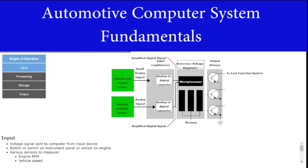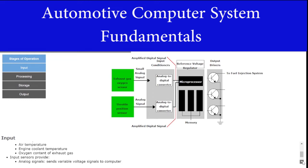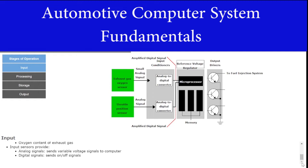An input is a signal received by the computer from an input device. An input device can be a button or switch on an instrument panel or a sensor on a vehicle's engine. A vehicle can use various electrical, mechanical, and magnetic sensors to measure engine RPM, vehicle speed, tire air pressure, air temperature, engine coolant temperature, and the oxygen content of exhaust gas. Most input sensors provide analog signals, such as the throttle position sensor, which sends a variable voltage signal to the computer. Other inputs send digital signals, such as the crankshaft position sensor, which sends an on-off signal.